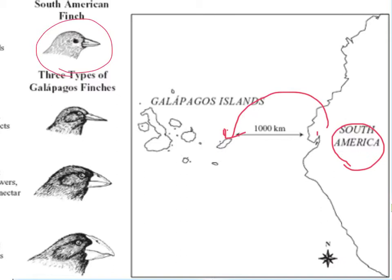Then maybe they migrated to another island, or a storm blew them there. They had to adapt to the selective pressure on that island. This allows you to create lots of different kinds of birds from one starting population.